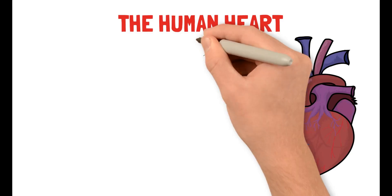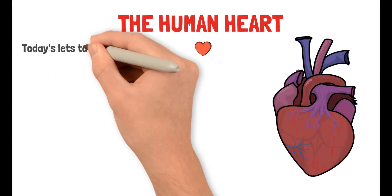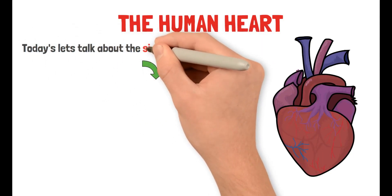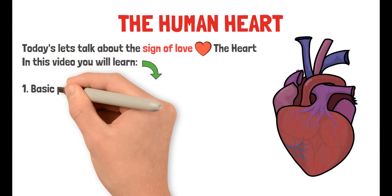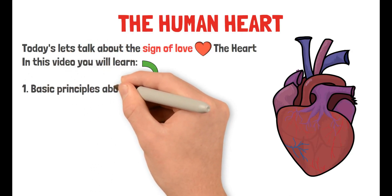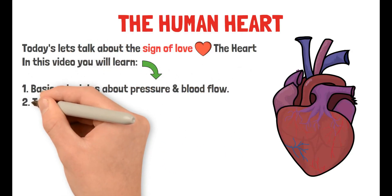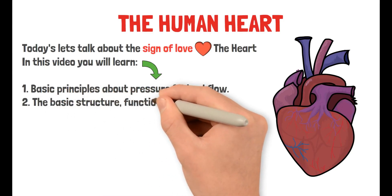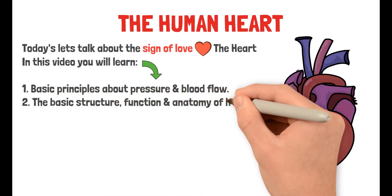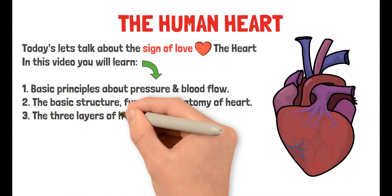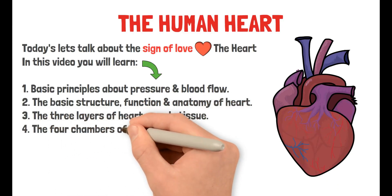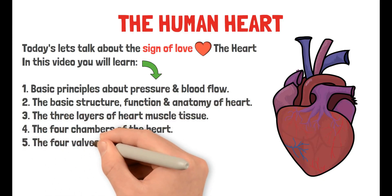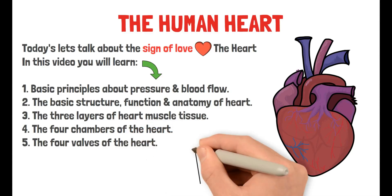The Human Heart. Today let's talk about the sign of love, the heart. In this video you will learn the basic principles about pressure and blood flow, the basic structure, function and anatomy of the heart, the three layers of heart muscle tissue, the four chambers of the heart, and finally the four valves of the heart.